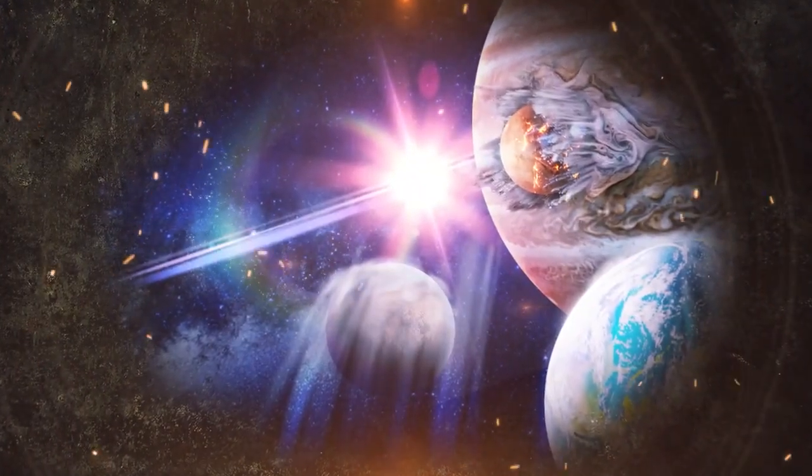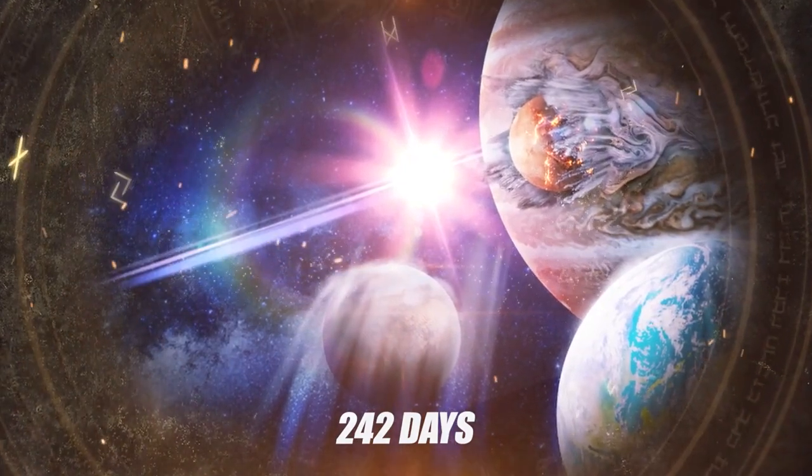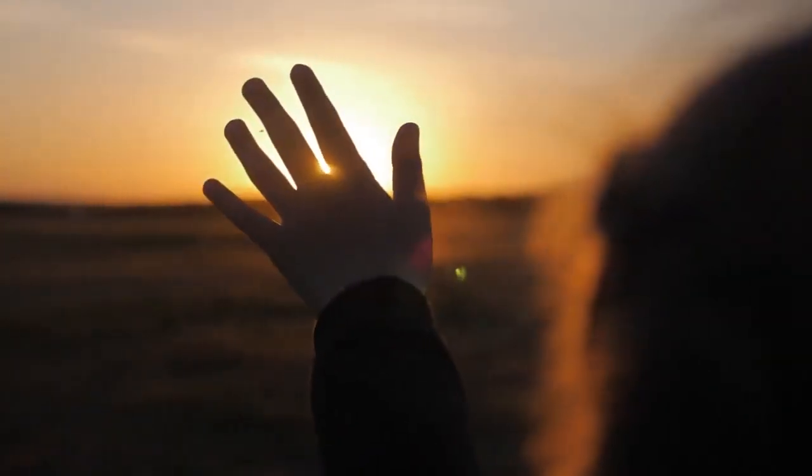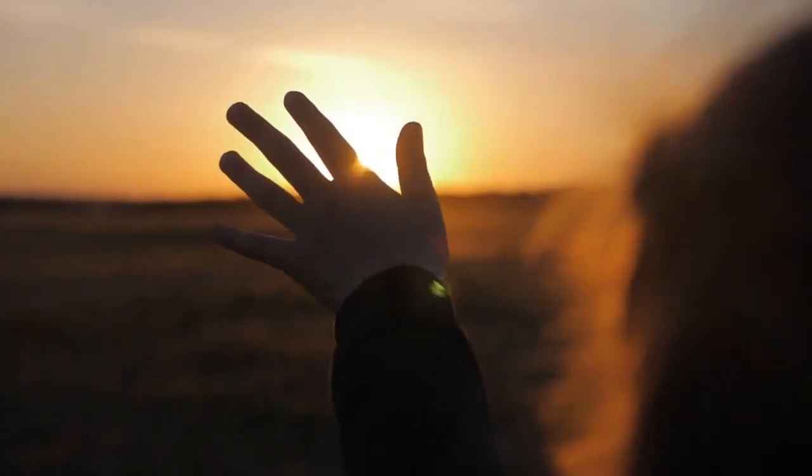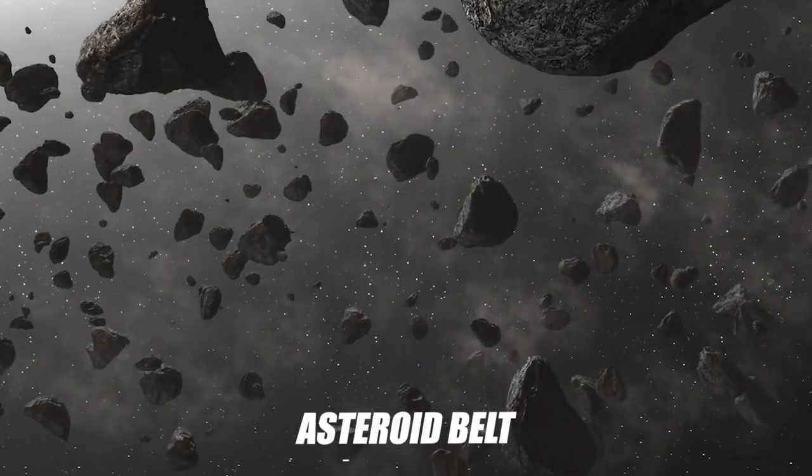If Earth moved off course, it might travel to Jupiter in some 242 days. As the Earth journeyed across the solar system, daylight would fade. As our planet approached Mars, we'd get 50% less sunlight. After passing Mars, our planet's next celestial landmark is the asteroid belt.